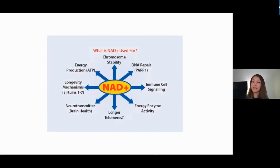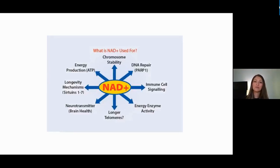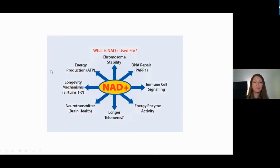Sirtuin 1 regulates multiple processes including autophagy and DNA repair. Whenever there is a DNA break in the cell, Sirtuin 1 is one of the first players to arrive at the site of damage to attempt repair. Sirtuin 3 is related to mitochondrial function and mitochondrial biogenesis — a very important process for energy production.